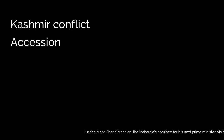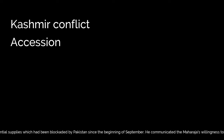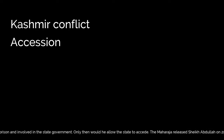Justice Mehr Chand Mahajan, the Maharaja's nominee for his next prime minister, visited Nehru and Patel in Delhi on 19 September, requesting essential supplies which had been blockaded by Pakistan since the beginning of September. He communicated the Maharaja's willingness to accede to India. Nehru, however, demanded that the jailed political leader Sheikh Abdullah be released from prison and involved in the state government — only then would he allow the state to accede. The Maharaja released Sheikh Abdullah on 29 September.